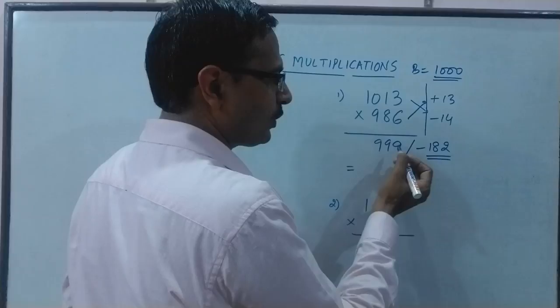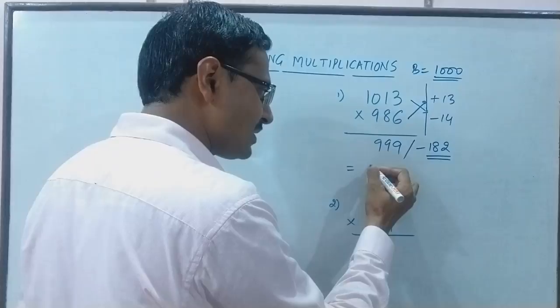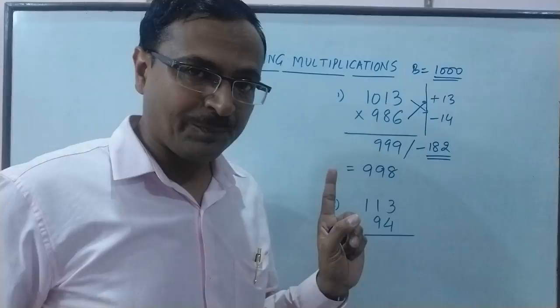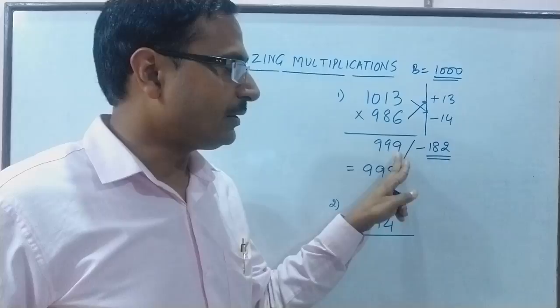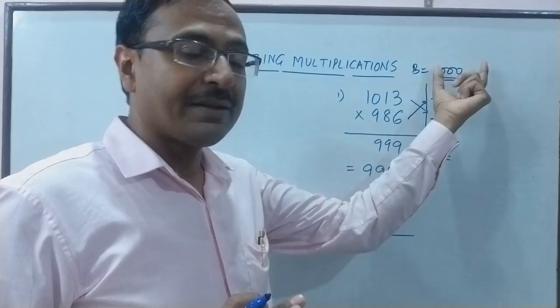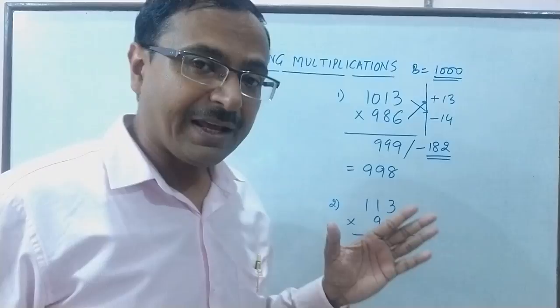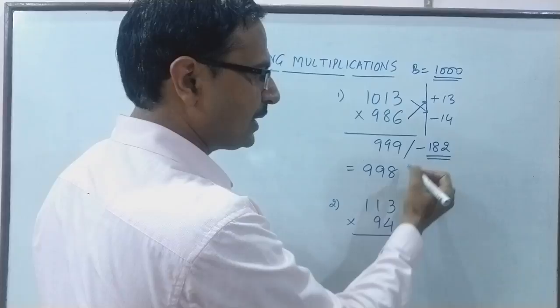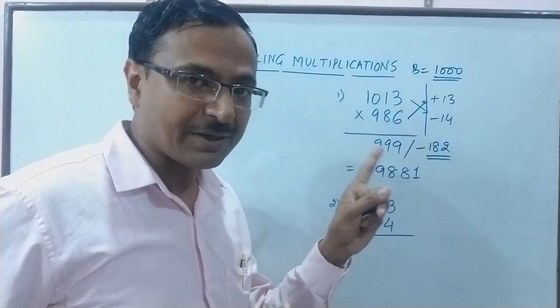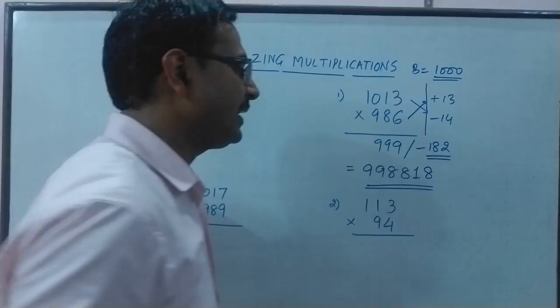Now since this is negative, you reduce this number triple 9 by 1. So in the answer you have to write 998 and not 999. So I am reducing this number by 1 and in turn I will be subtracting this 182 from the base quantity that is 1000. We have the Vedic mathematics trick of all from 9 and last from 10. Keep subtracting every digit from 9: 9 minus 1 is 8, 9 minus 8 is 1, and the last digit from 10: 10 minus 2 is 8.